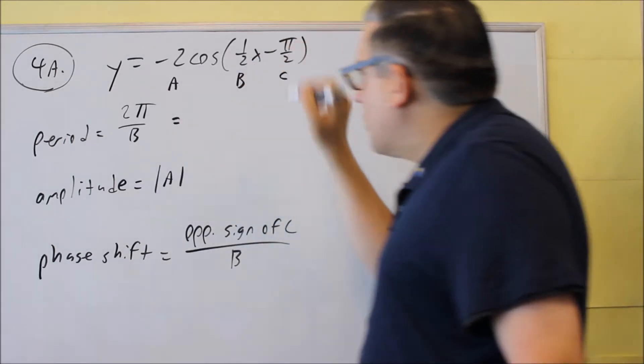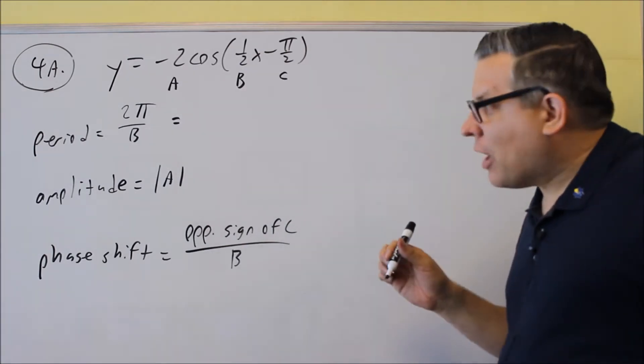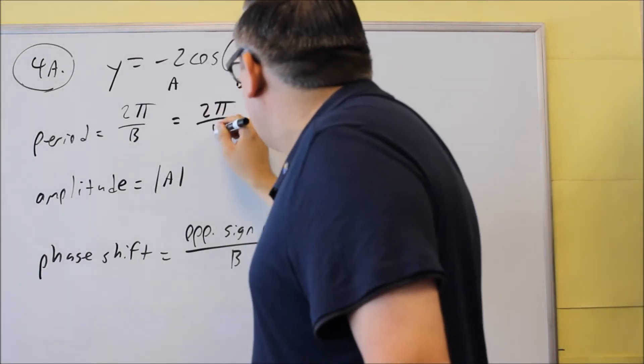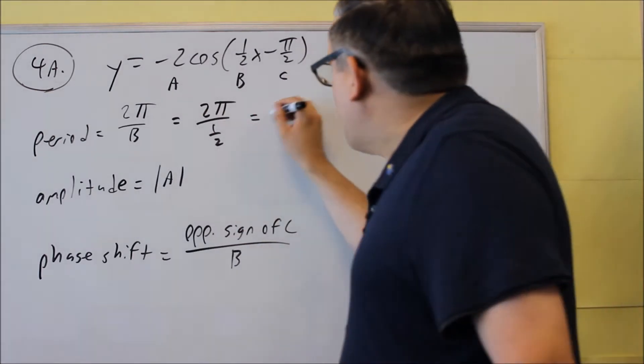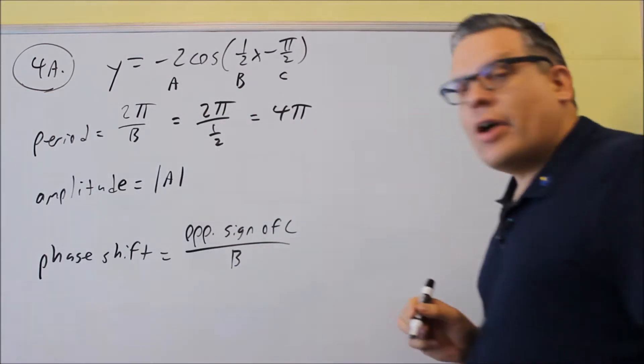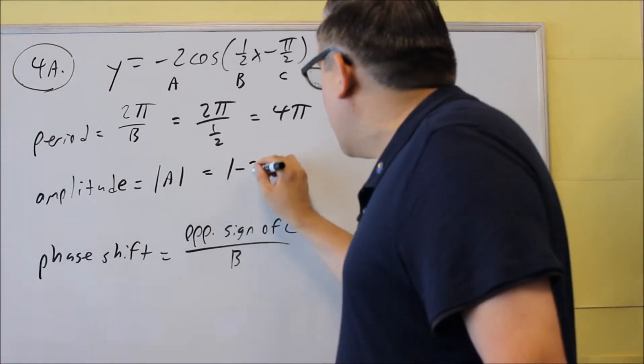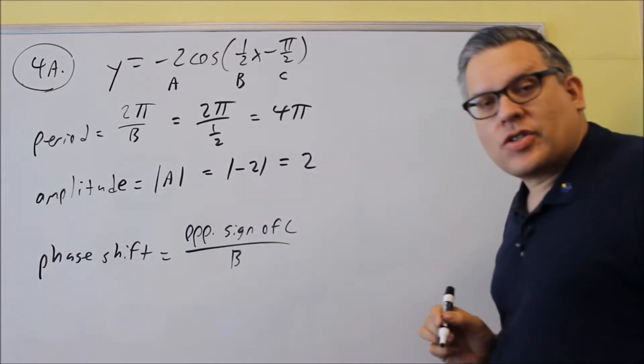Let's go ahead and calculate this based on what's provided on this problem. This is 2π over the number in front of the x, so 2π over 1/2. If you flip and multiply, you get 4π. This one, the absolute value of -2 is positive 2.